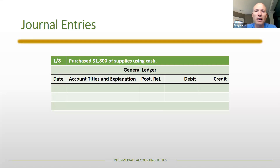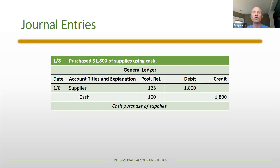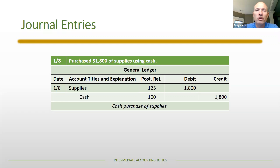Purchased eighteen hundred dollars of supplies using cash. Debit supplies, credit cash. Supplies have a future economic benefit — pens, pencils, paper, whatever it might be — so that's a future economic benefit I own. The cash is a credit, reducing it. Notice there's no expense when I purchase the supplies; the expense comes later as I use them. That'll be covered in adjusting entries.